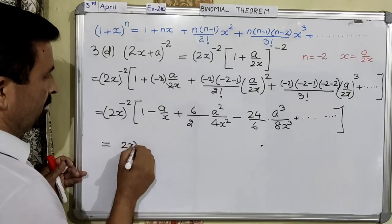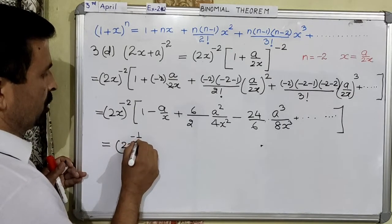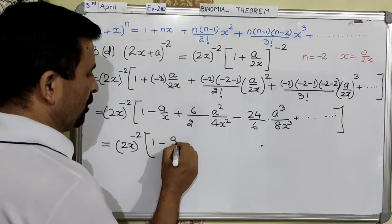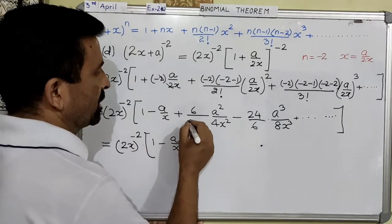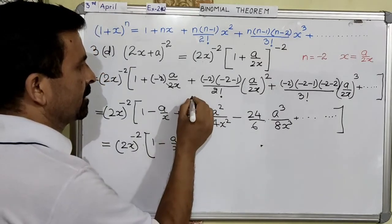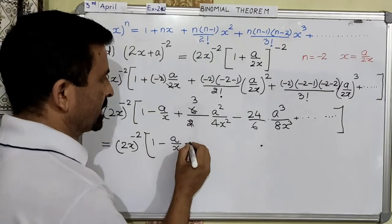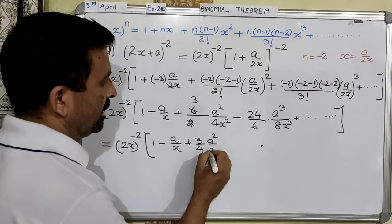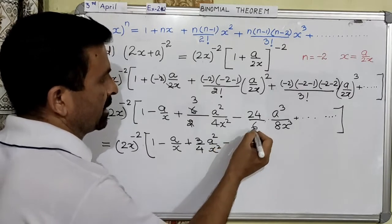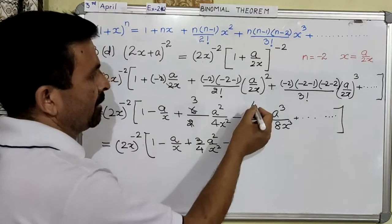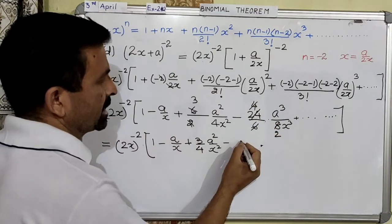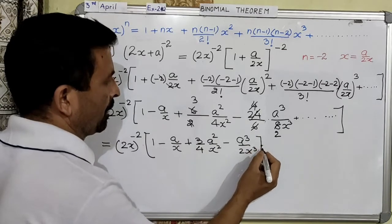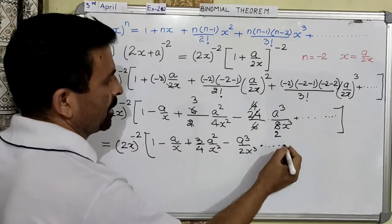So continuing the simplification: 1 minus a over x, this part — 2 times 3 is 6, 2 times 3 is 6, now nothing can be simplified — plus 3 over 4, a squared over x squared, minus 6 over 24 — which simplifies — 4 times 8 gives us a cube over 2x cubed, and so on.